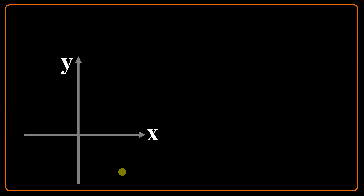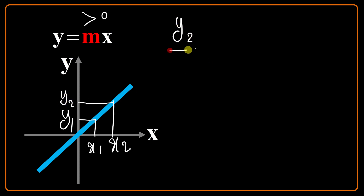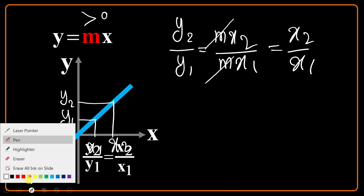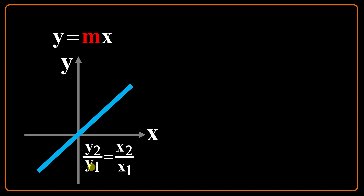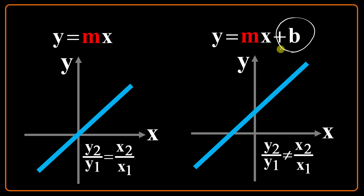Look at the graphical view. If y equals mx and m is positive, it is a line passing through the origin — an ascending line. I take an arbitrary value x1, put it in the equation, and find y1. I put another x2 and get y2. I can write y2 over y1 equals mx2 over mx1. If you cancel the m, you get x2 over x1. So the main property of the proportional relation is that y2 and y1 have the same ratio as x2 over x1. But when you have a linear relation with a vertical intercept, you cannot write y2 over y1 equals x2 over x1. This is a very important point.